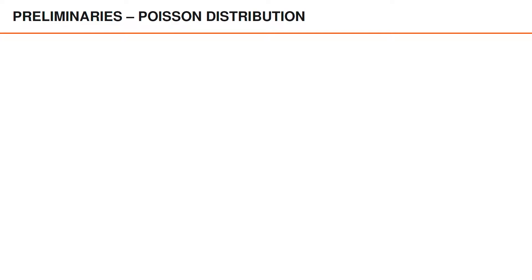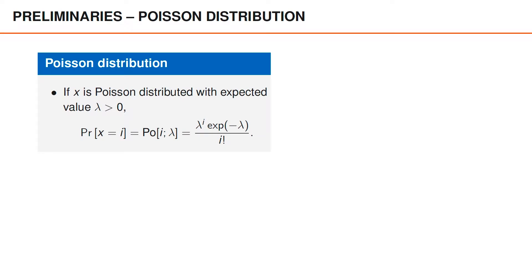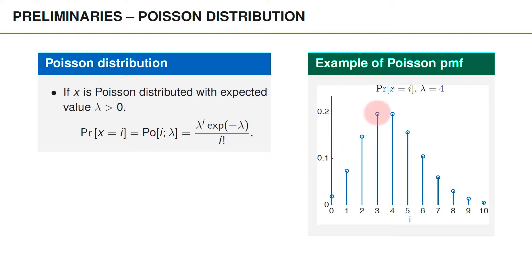Another useful distribution is the Poisson distribution, which is commonly used to model the number of events in a certain time interval — for instance, the number of clients entering a supermarket during one hour. We normally parameterize the Poisson distribution with a parameter lambda, which is the expected value of the random variable. If x is Poisson distributed with expected value lambda, then the probability that x equals i is lambda to the power of i times e to the power of minus lambda, divided by i factorial. We denote this function as Po(i; lambda) in compact form. If we plot this probability mass function for lambda equal to 4, it looks fairly spread out. A Poisson distributed random variable has the same mean and variance, so we cannot increase the expected value without also increasing its variance. As a side note, both the Poisson and binomial distributions on these slides have expected value 4, yet their probability mass functions are quite different.